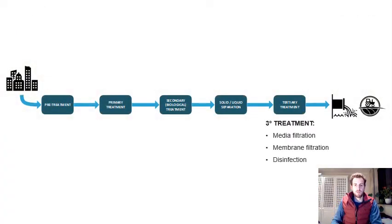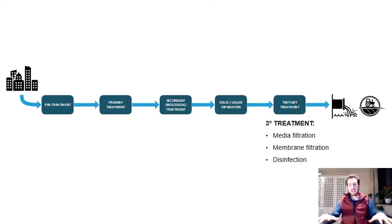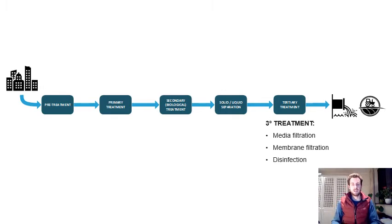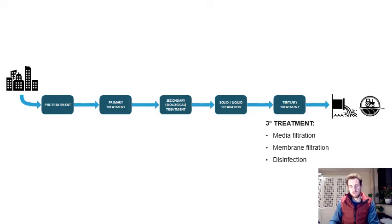Following secondary treatment, we have tertiary treatment. This could be media filtration, membranes, or lagoons — basically to capture the last bits not caught in secondary treatment or solid-liquid separation. After that, we disinfect the water with a dose of chlorine to kill any remaining viruses and bacteria, and then it enters the river.